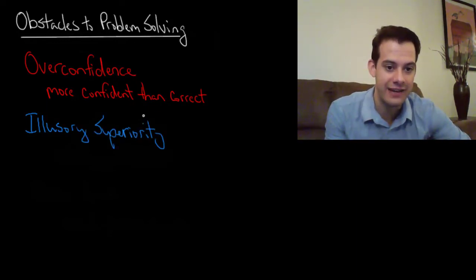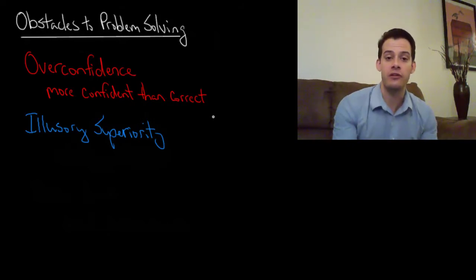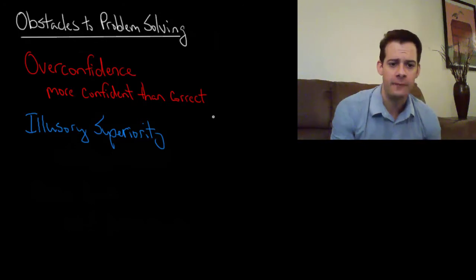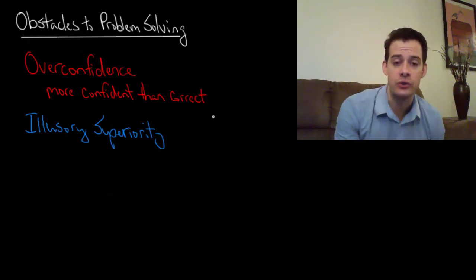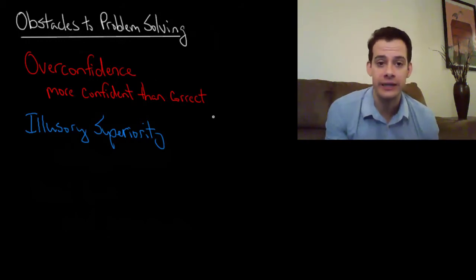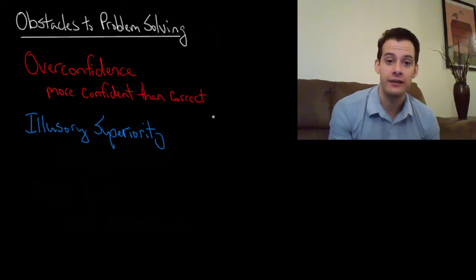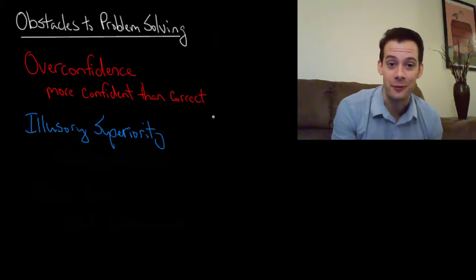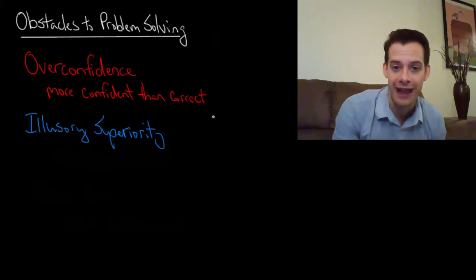So we tend to think of ourselves as being better than other people and not prone to the same errors that other people are prone to. And we can see this if we ask people to assess their attractiveness or their driving ability and it turns out most people say that they're above average. Of course this is statistically impossible, most people cannot be above average.